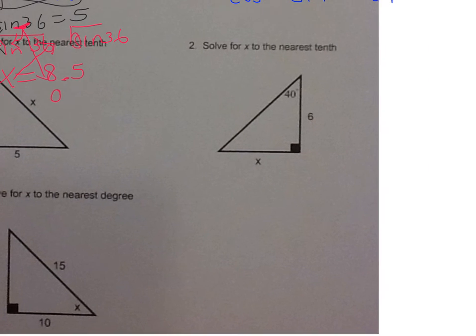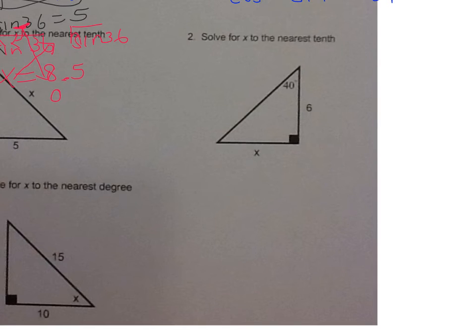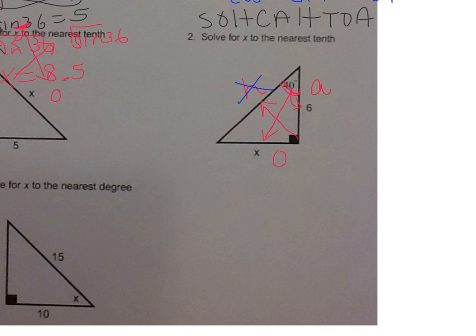It says to solve for x to the nearest tenth. So again, I'm going to start with the hypotenuse. It's opposite the right angle. So that's H. This is the angle that's given to me, so I go across. That's the opposite, so I put an O. And the side that's next to it, that's 6. That's the adjacent side. So using SOHCAHTOA, which function is going to use O and A, because the H is not being used? So which function uses O and A? That would be tangent.